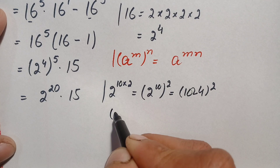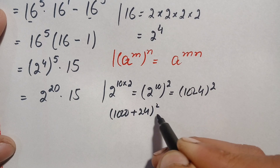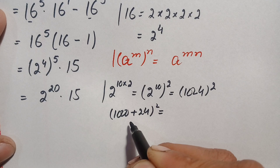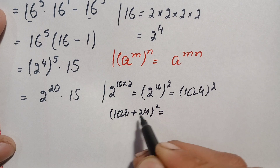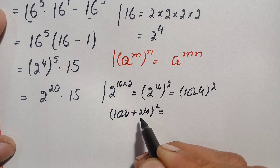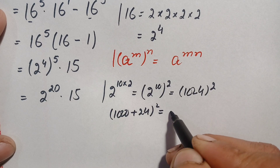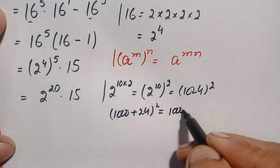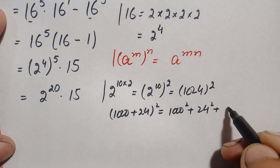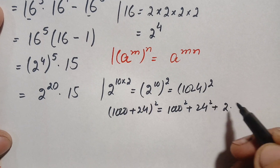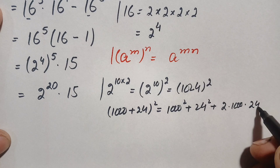We write 1024 as (1000 + 24) and apply the algebraic identity (a + b)^2 = a^2 + b^2 + 2ab. So this becomes 1000 squared plus 24 squared plus 2 times 1000 times 24.